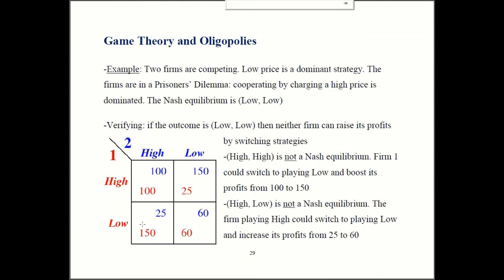Similarly, firm two could also deviate and raise its profits. So in the outcome high-high, they're both getting 100. If firm two starts playing low, but firm one is still playing high, then firm two's profits jump from 100 to 150. So firm two would like that, they have an incentive to switch strategies, so high-high is not stable and therefore not a Nash equilibrium.